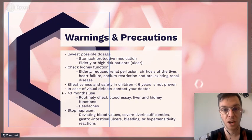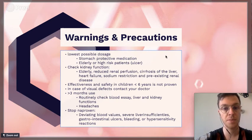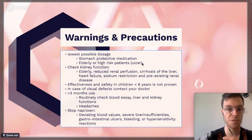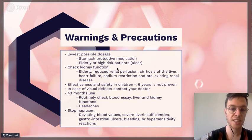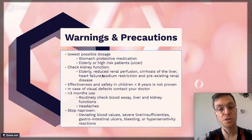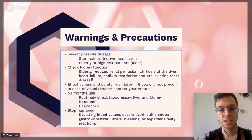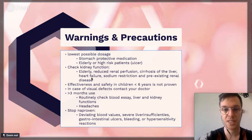Important warnings: always start the lowest possible dose and consider stomach-protective medication like proton pump inhibitors, especially for elderly and high-risk patients with ulcers. Check kidney function in elderly, persons with reduced renal perfusion, cirrhosis of the liver, heart failure, sodium retention, and pre-existing renal disease before prescribing Naproxen.